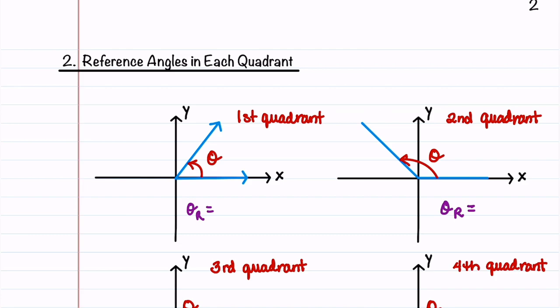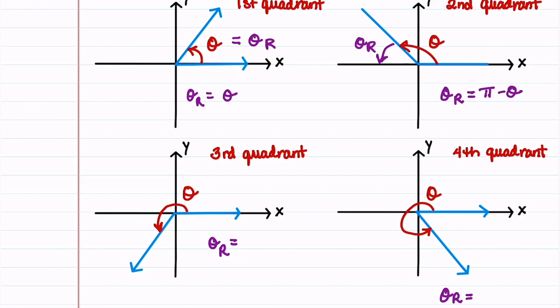We're now going to look at angles that lie in the first, second, third, and fourth quadrants and find the reference angles. When theta is in the first quadrant, our reference angle is equal to theta, so theta r equals theta. When theta is in the second quadrant, our reference angle is the positive acute angle between the terminal side and the x-axis, and we say theta r is pi minus theta. When theta is in the third quadrant, our reference angle gives us theta sub r equal to theta minus pi.